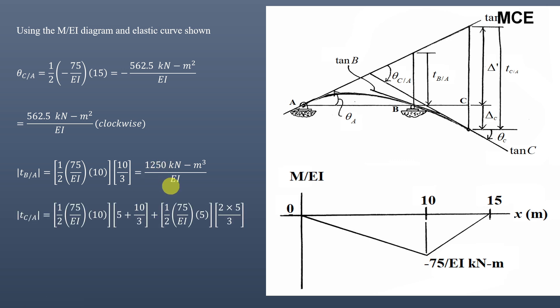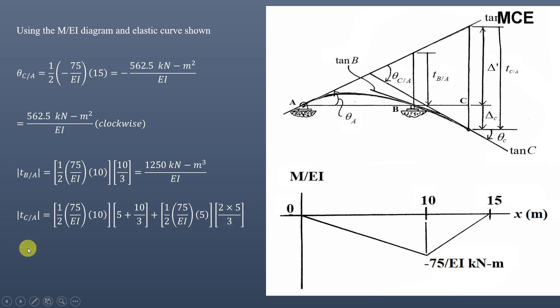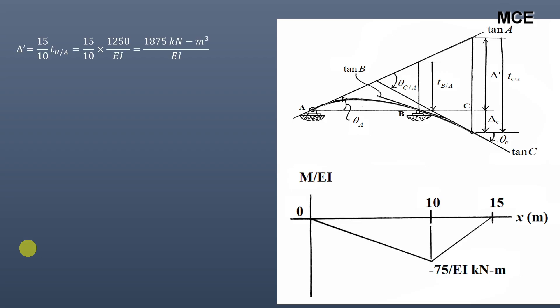The vertical deviation of the tangent at C with respect to the tangent at A, t_ca, is the moment of the M/EI diagram area about point C. We divide the M/EI diagram into two triangles. The first triangle has area 1/2 × (75/EI) × 10 with centroid at (5 + 10/3) from C; the second has area 1/2 × (75/EI) × 5 with centroid at 2×5/3 from C. This gives t_ca = 3750/EI.